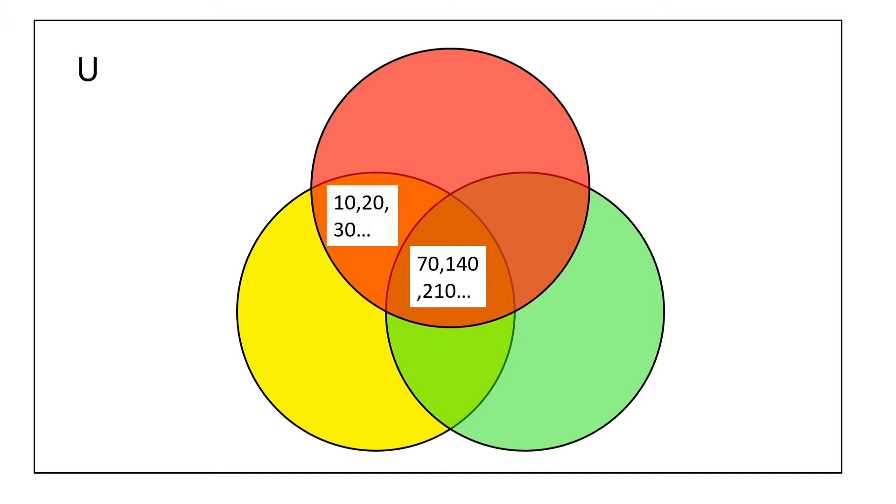This orange portion contains multiples of 10 because each element in this set is a multiple of 2 as well as 5. Similarly, this light brown portion contains multiples of 14, and this bright green part contains multiples of 35.